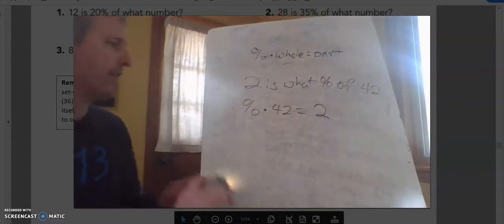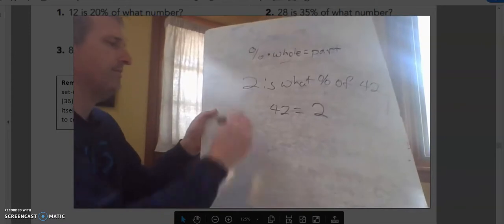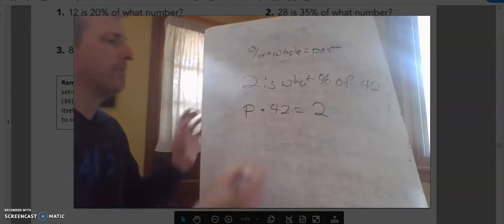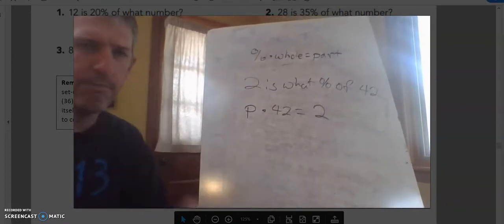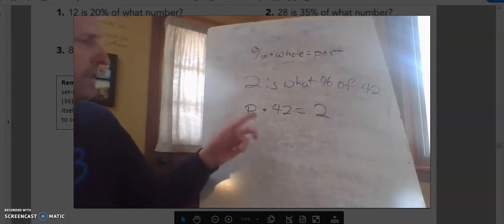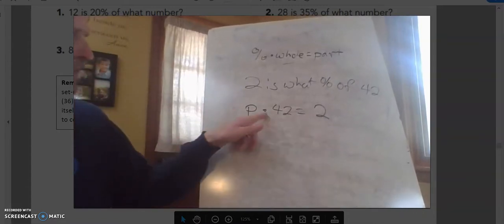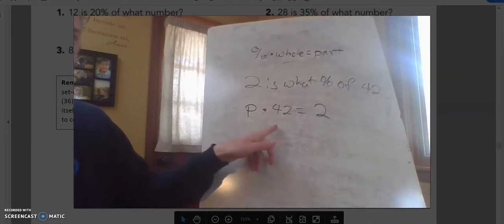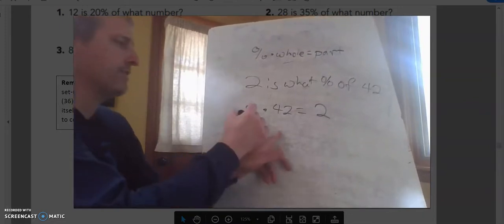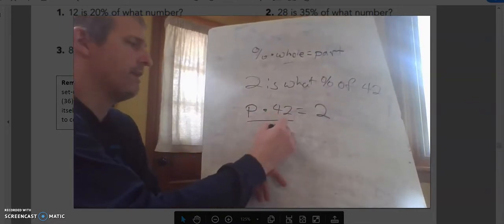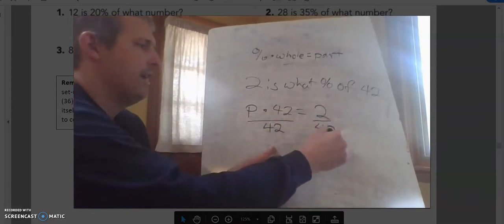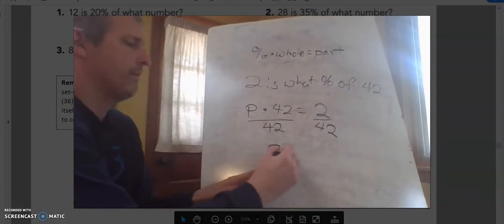And what I could do here is I could put a P, which is a variable representing percent, and percent times 42 equals 2. So inverse operation of multiplication, because our P is being multiplied by 42, we need to do the inverse of that, the opposite, which is divide by 42. And I get P, or my percent, equals, and then we'll go to our calculator.